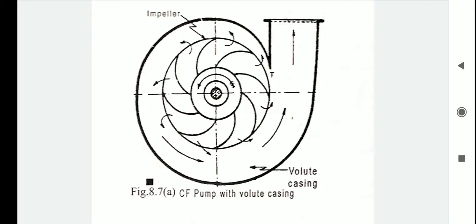Before the water enters the delivery pipe, there are mainly three types of casing: first is volute casing, second is vortex casing, and third is diffuser casing.